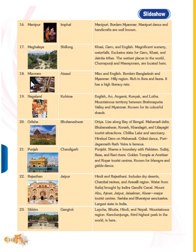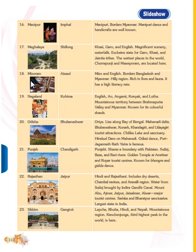Number 18 is Mizoram, and the capital of Mizoram. The language spoken here is Mizo and English — Mizoram mein boli jati hai woh Mizo aur English language hai. It is a border state of Bangladesh and Myanmar, which is a highly region rich in flora and fauna.